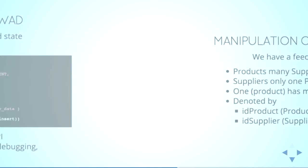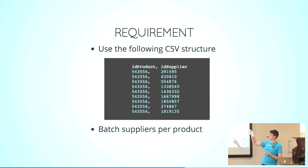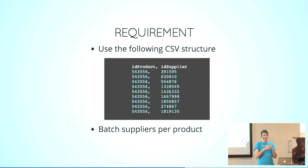Another use case from our work: we have a feed file, which gives you a list of products and who provides that product. There are lots of products and many suppliers — it's a long list. The job here was to group them all together and make branches out of them based on a per-ID-product basis, so you have all the suppliers together for one product. That's actually something we need to do at work.